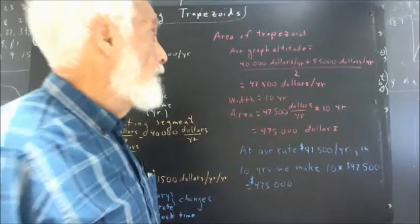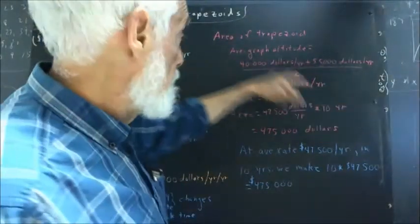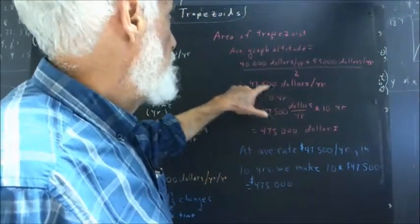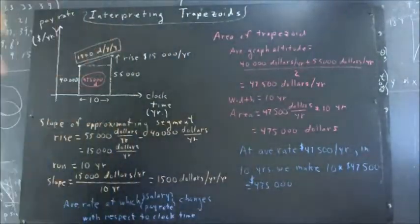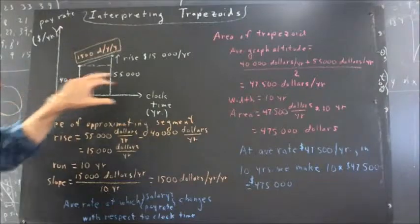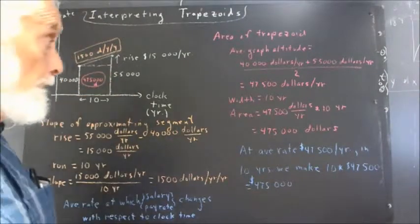So to find the area, we take the average of the graph altitudes, straightforward calculation. We add the two graph altitudes and divide by two, and we get $47,500 per year, the average of $40,000 a year and $55,000 a year.